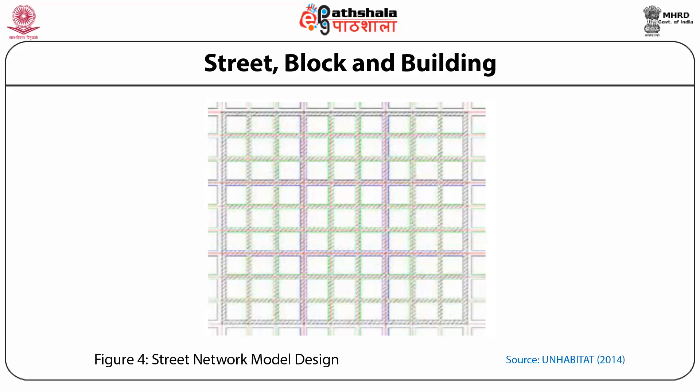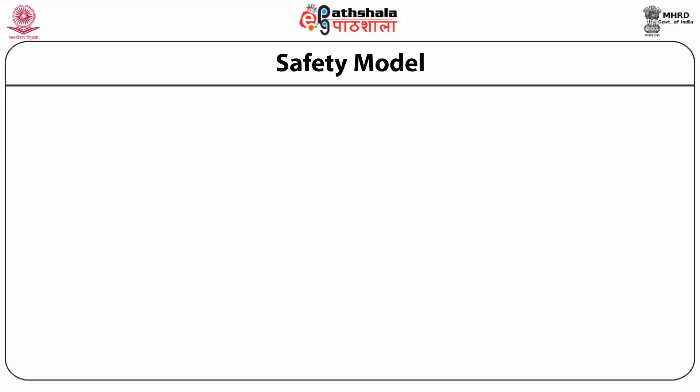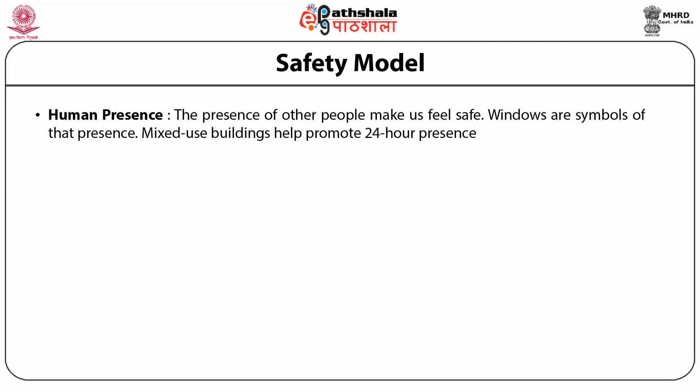Apart from this connectivity model, the safety model says streets should have seven qualities. Number one: human presence. People in public space must feel the presence of other people in the space and in surrounding buildings. The sense that we are not alone and are being observed helps us behave properly and feel safe. Windows are symbols of that presence, whether people are behind them or not. Mixed-use buildings help promote 24-hour presence.